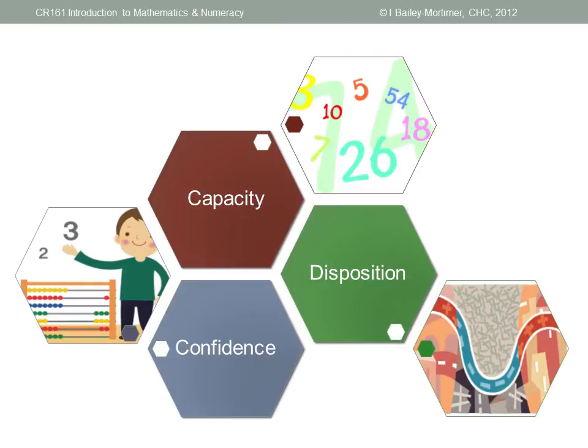These three ideas — capacity, confidence and disposition — work together to describe numeracy. Our students need all three to function as numerate citizens in the adult world. So how can we get them there? How can we build not only our students' ability in mathematics, but also their confidence? What can we do to help them to see the world through mathematical eyes and to encourage them to apply their knowledge and skills — to want to use mathematics?